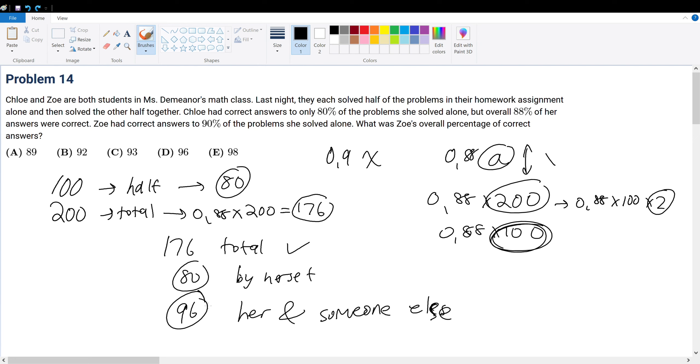If 96 were the amount that she got correct, then by logic Zoe must have also gotten this number correct, because they worked together so their answers for each question were the same. Therefore, not only did Zoe get 96 correct, but Chloe also got 96 correct.